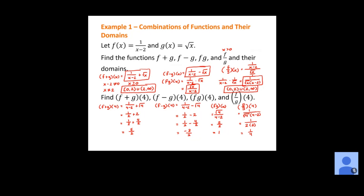Keep in mind that addition, subtraction, and multiplication all have exactly the same domain. It's only division that might have an additional restriction — just remember that g(x) cannot equal 0 when finding the domain for the quotient.